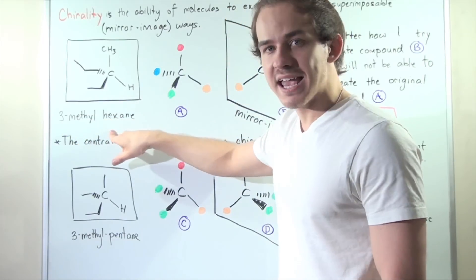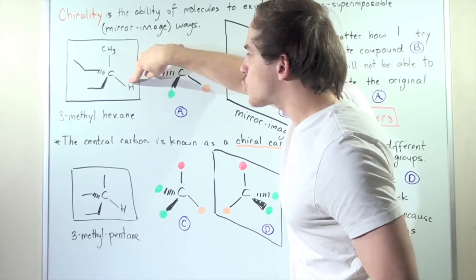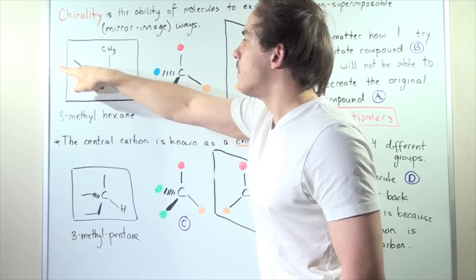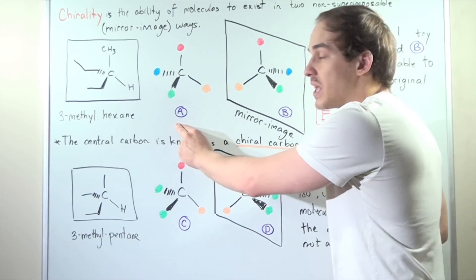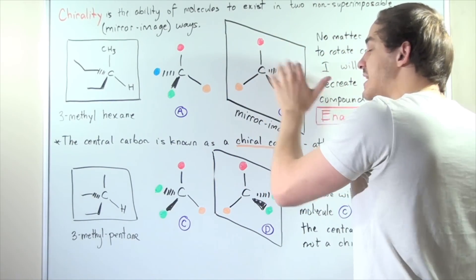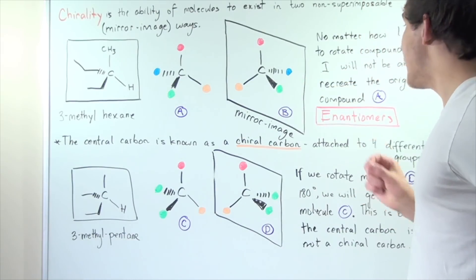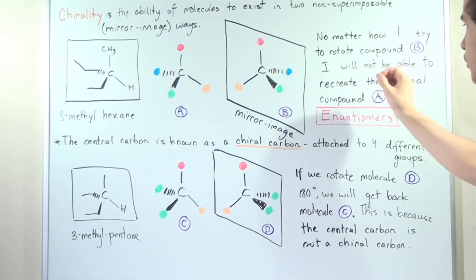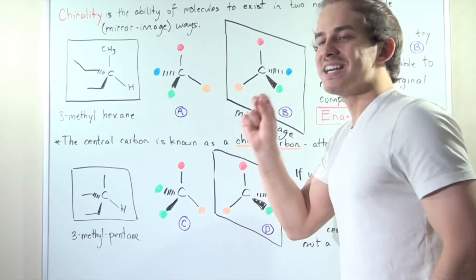As an example, let's look at 3-methylhexane. Here we have a central carbon attached to four different groups: the H group, the orange group, the green group (the ethyl group), the blue group (the propyl group), and the red group (the methyl group). Let's call this compound A. If I take compound A and place it next to a mirror, a mirror image is produced — let's call this compound B. No matter how I rotate compound B, I will not be able to recreate the original compound A. We call these two molecules chiral molecules.